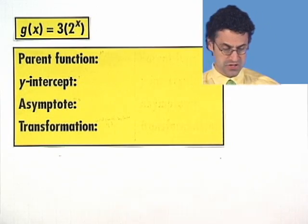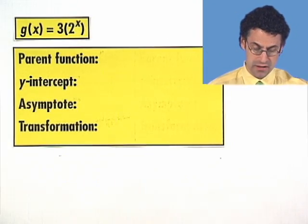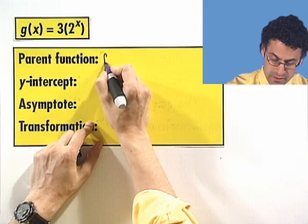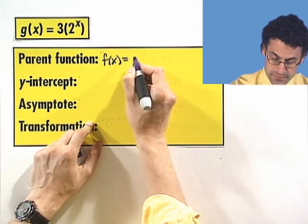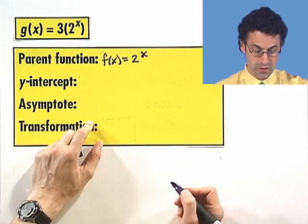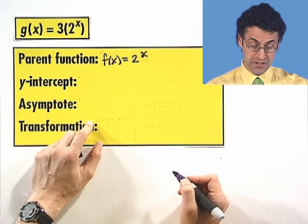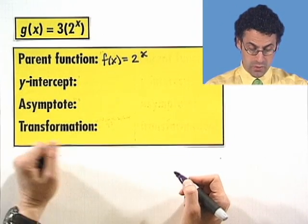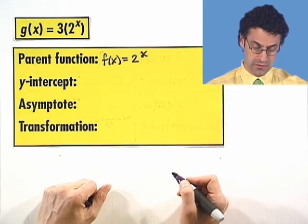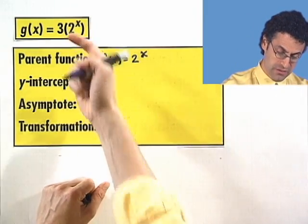So, what is the parent function? Well, the parent function here would just be the exponential function 2 to the x. What's the y-intercept? Well, the y-intercept would be when x is 0. So if I let x equal 0, I'm going to see that the y-intercept is 3.